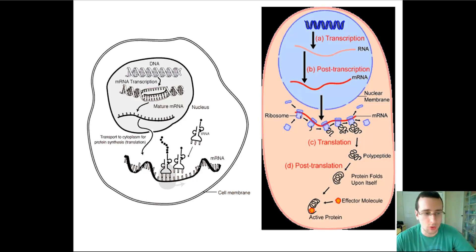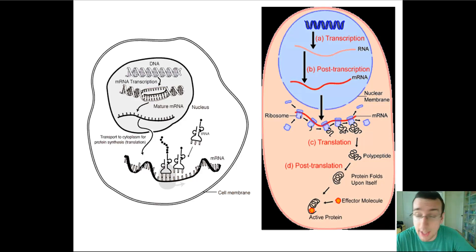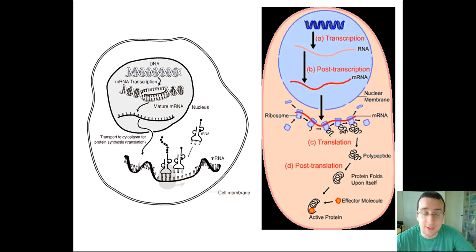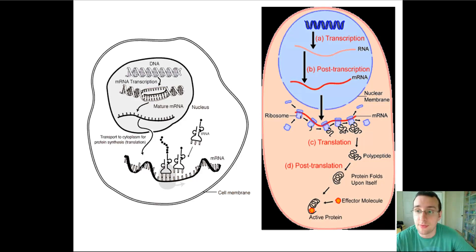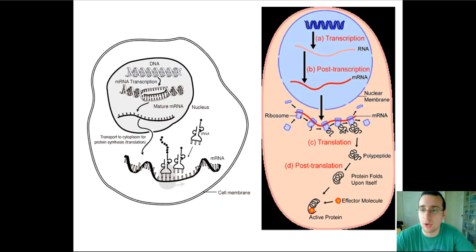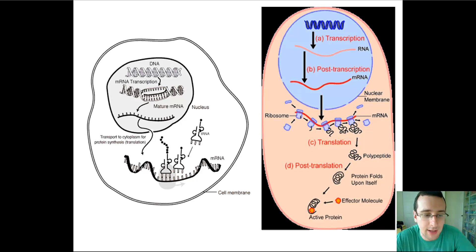The RNA will find a ribosome — or rather, a ribosome will find it — and attach to it. Then the synthesis process will start in something called translation, where the genetic message stored in RNA is translated into a different kind of structure, which is no longer nucleic acid. That's why it's called translation — a different kind of molecule, this time a polypeptide or protein.